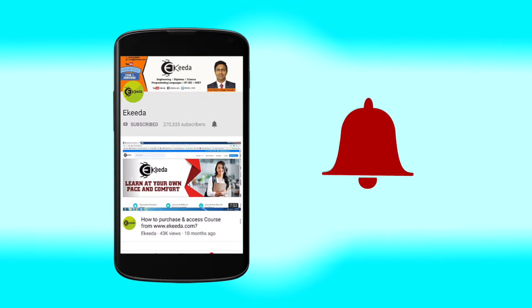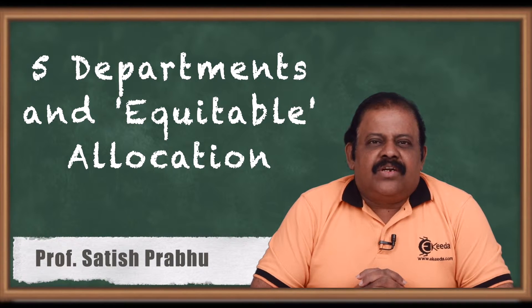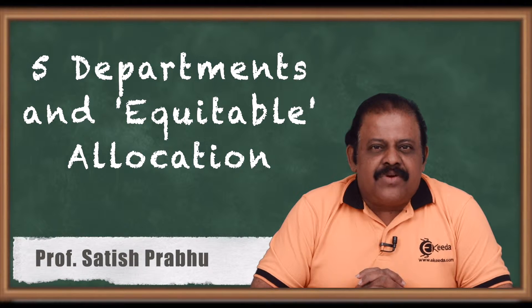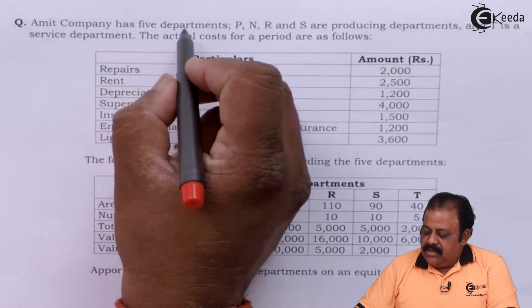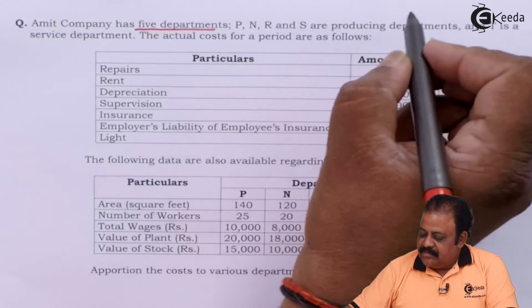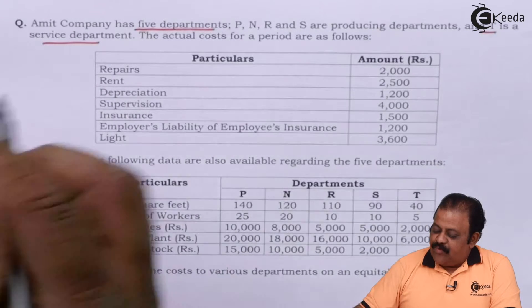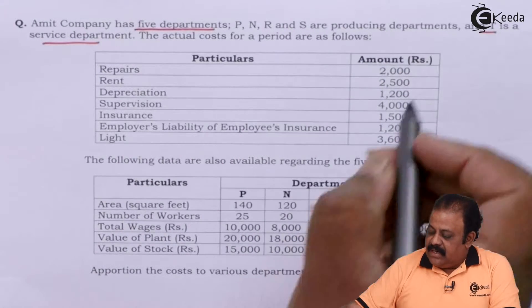Hello friends, let us do one question of primary distribution of production overheads where four production departments and one service department is given. Amit company has five departments: P, N, R, S are producing departments and T is a service department.